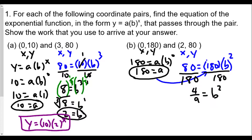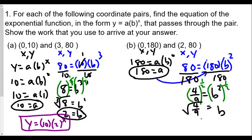To solve for b, we raise both sides to the reciprocal of the exponent. The reciprocal of 2 is 1/2. Using the power rule, b^2 raised to the 1/2 gives b^1. And (4/9)^(1/2) is the same as the square root of 4/9, which equals the square root of 4 over the square root of 9, giving us 2/3. So b = 2/3.